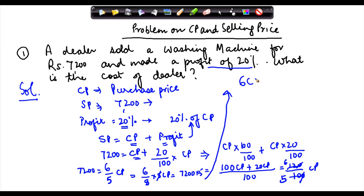So 6 times cost price is equal to 7200 into 5. 36000. So if 6 times the cost price is equal to 36000, what is the cost price? Cost price is equal to 36000 divided by 6 is equal to 6000. So my cost price is equal to 6000.